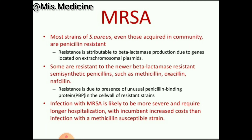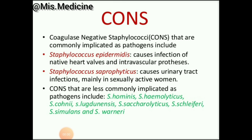MRSA is methicillin-resistant Staph aureus. Most strains of Staph aureus, even those acquired in the community, are penicillin resistant. Resistance is attributable to beta-lactamase production due to genes located on extrachromosomal plasmids. Resistant strains also carry an unusual penicillin-binding protein (PBP), leading to PBP2A.